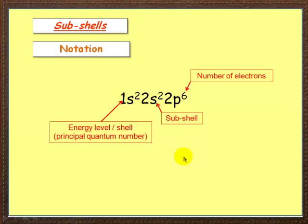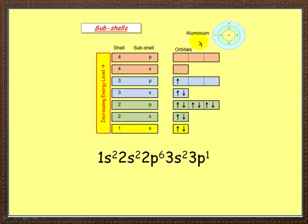Let's look at a few more examples. Here we've got aluminum. Aluminum has got 1s2, there we go, 2s2, 2p: 1, 2, 3, 4, 5, 6, 3s2, there we go, and 3p1. Can you see that?